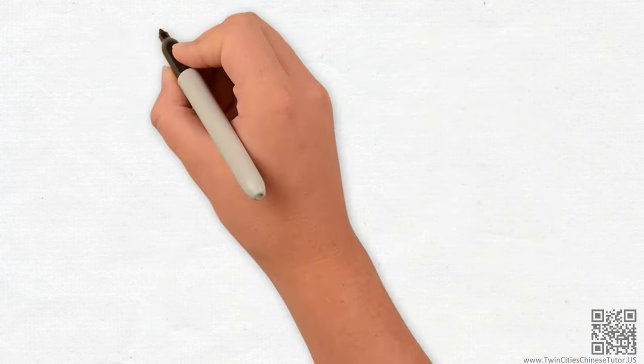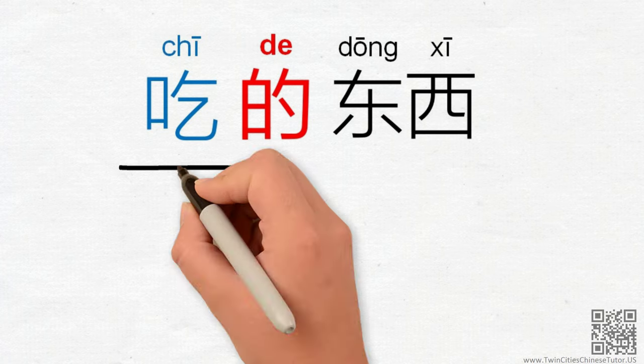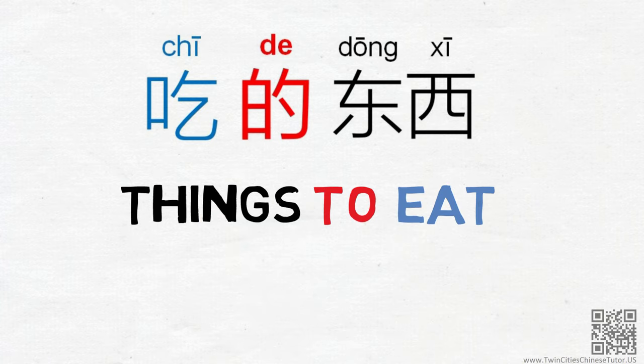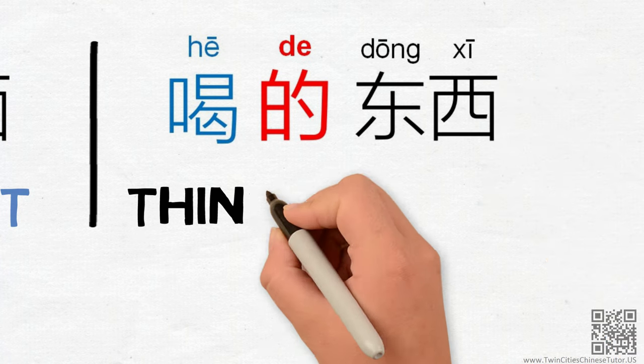With verbs, we might see phrases like 吃的东西. Here, 吃 or eat is the verb to describe 东西, which means things. So, 吃的东西 means things for eating or things to eat. Similarly, 喝的东西 means, you got it, things to drink.